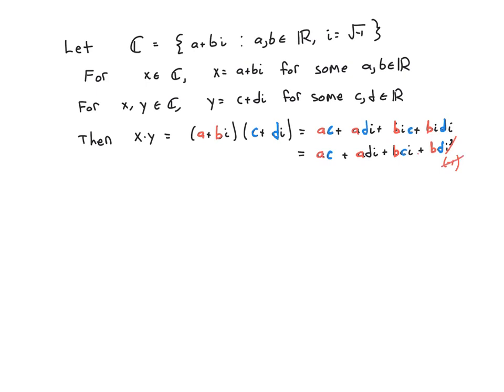So this last term is actually negative b times d. And we note that we have this common factor of i on these two middle terms.